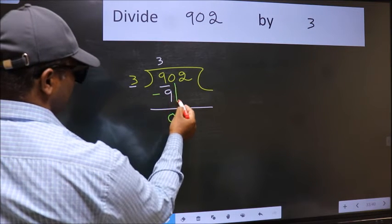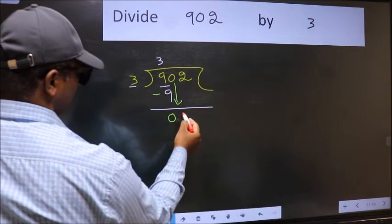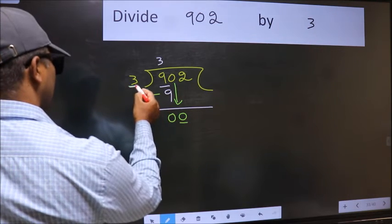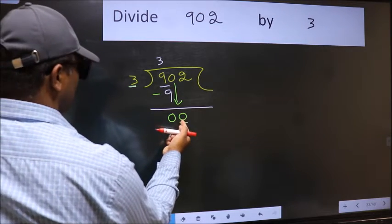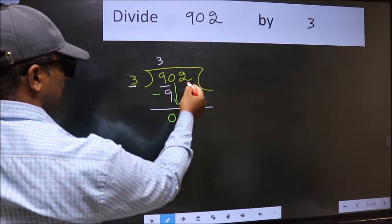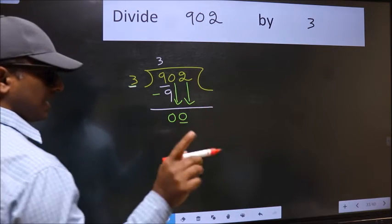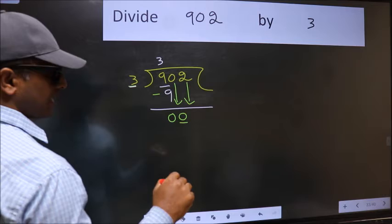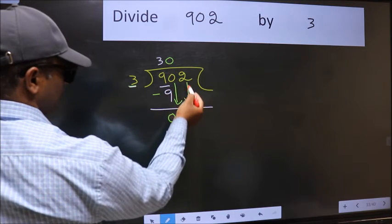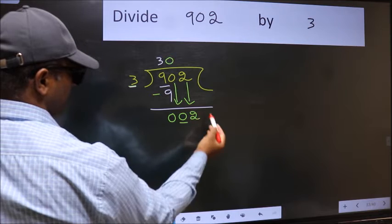After this, bring down the beside number. So 0 down. Now here we have 0 and here 3. 0 is smaller than 3, so we should bring down the second number. And the rule to bring down the second number is we should put 0 here. Then only we can bring down the second number.